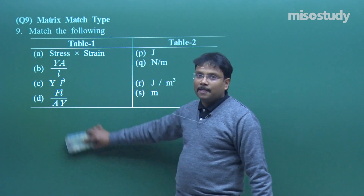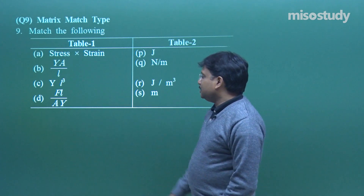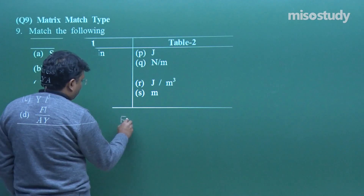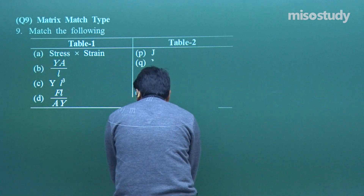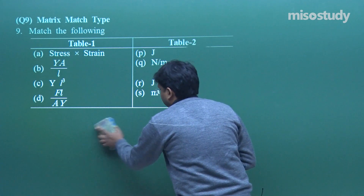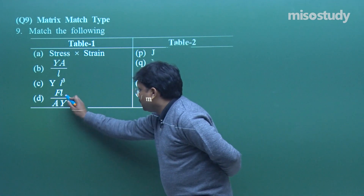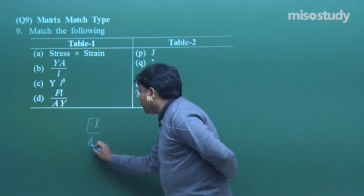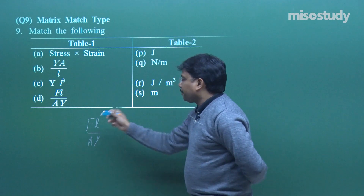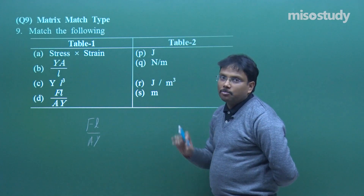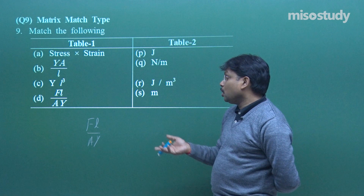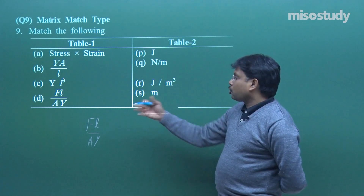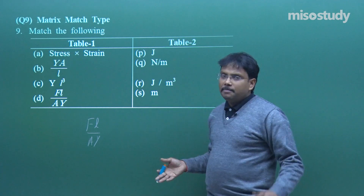For example, take FL upon AY. Put all dimensional formulas: F is MLT⁻², L is L, A is L², and work out Y which equals pressure. Solve it and whatever remains, mark that as the answer. Simple.